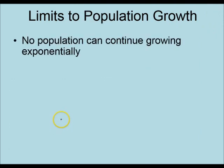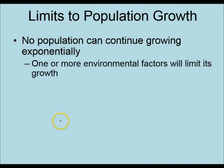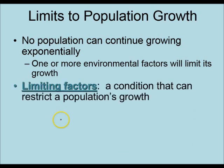As we saw in that J-shaped curve, that is a continuously growing population. However, no population can continuously grow exponentially — it just doesn't happen, especially in nature. There is usually some environmental factor that limits that population's growth. We call those limiting factors. A limiting factor is any condition — it could be an abiotic or biotic factor, density-independent or density-dependent — that limits the actual growth of the population.